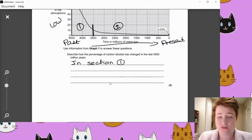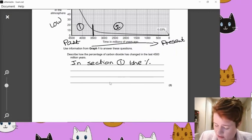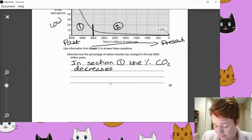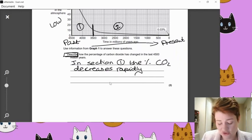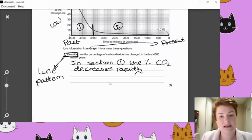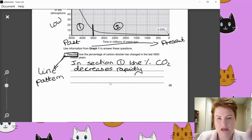To get two marks, we need to describe each section independently. So something along the lines of what you can do is go in section one. So in section one, the percentage of CO2 decreases rapidly. Now, since this is a describe question, that's all that we kind of have to do. So describing is just describing what the line looks like or what the pattern is. If it was asking for explain, it would want you to give the reason why that pattern was that shape.